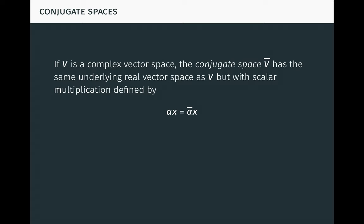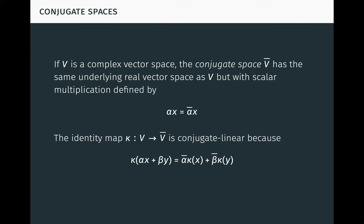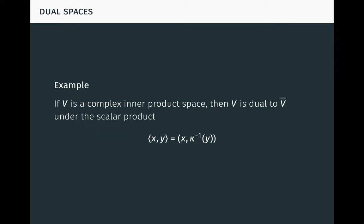If V is a complex vector space, the conjugate space V-conjugate has the same underlying real vector space as V, but with scalar multiplication defined using complex conjugation. Here the left-hand side is scalar multiplication in V-conjugate, while the right-hand side is scalar multiplication in V. The identity map kappa from V to V-conjugate is then conjugate linear, because kappa of alpha x plus beta y is alpha-conjugate kappa x plus beta-conjugate kappa y, as you should verify. Now if V is a complex inner product space, then V is dual to V-conjugate under the scalar product defined here. Notice how the conjugate linearity of kappa counteracts the conjugate linearity of the inner product to produce a scalar product. In this case, two wrongs really do make a right.